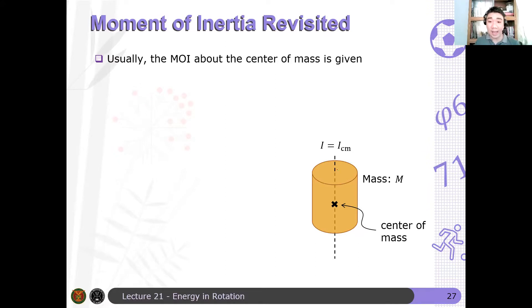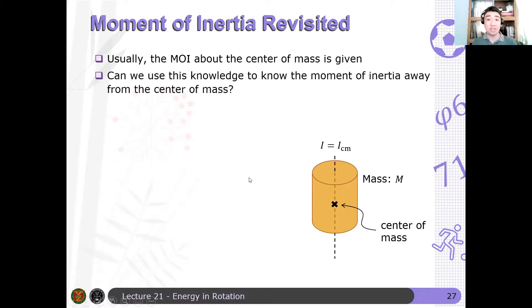So for example, if this is some axis of rotation here, iba yung magiging moment of inertia pag dilipat mo yung axis of rotation na yan. Iba yung magiging MOI niya. It really depends. So the question now is, can we use our knowledge of the given moment of inertia to know another moment of inertia away from the center of mass?